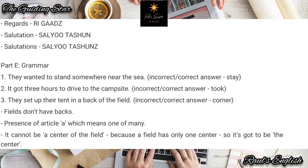Number two: 'It got three hours to drive to the campsite.' What does that mean? It should be 'it took three hours to drive to the campsite' — not 'it got.' It took three hours to get to the campsite or to drive to the campsite.